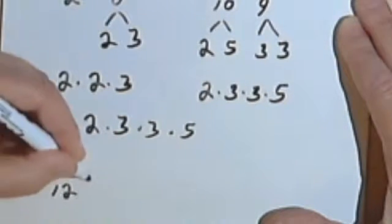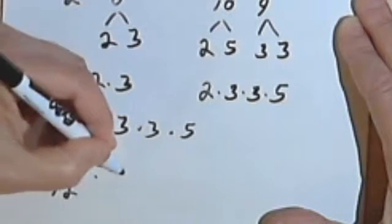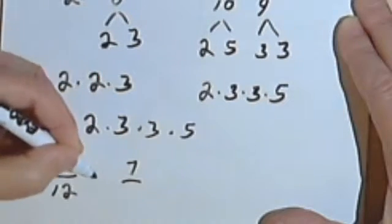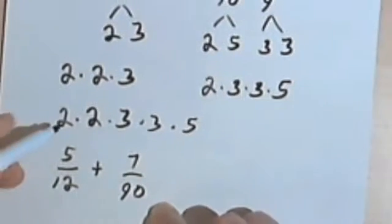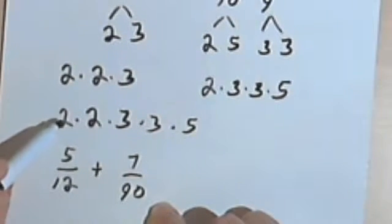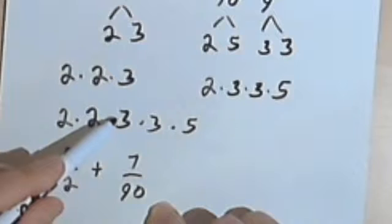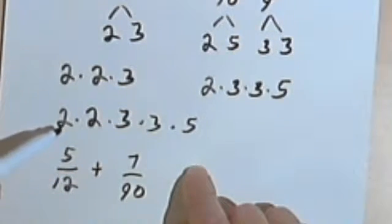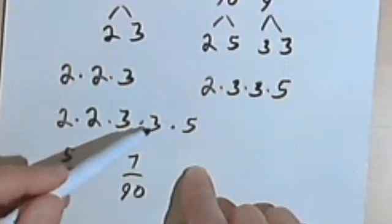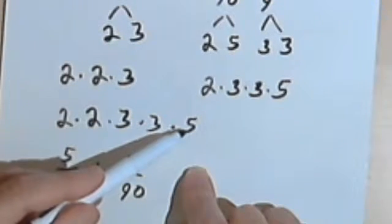This was 5 over 12 plus 7 over 90. Well, I know that 12 is 2 times 2 times 3. And that means if I want to get to whatever my least common multiple is, I would still have to multiply it by a 3 and a 5.